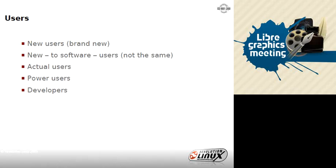We have users who are new to a particular piece of software, but it's not the same as brand new users. When we talk about people using Photoshop CS, these are new users to GIMP, for example, but they're not fresh users — they have habits, and sometimes bad habits that prevent them from just being open. The question is: what can we do to help those people get into open source software? Sometimes the decisions we're making will prevent those people from getting in, and we could have done things simpler.